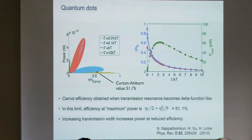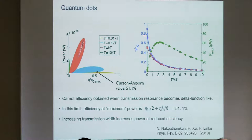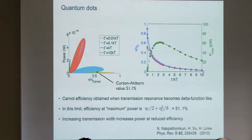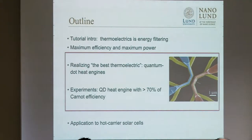If the resonance is very sharp you get close to the Curzon-Ahlborn efficiency at maximum power but the power stays very small. Opening up the resonance gives much higher power at the cost of lower efficiency at maximum power. It turns out a resonance width of about kT gives the maximum power. One can also play with resonance shape—asymmetric resonances from 1D conductors or molecular interference effects can push performance even higher, but that's a subject for a different talk.